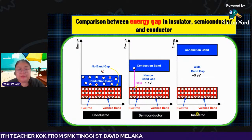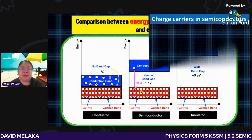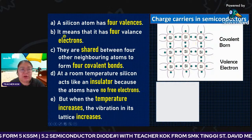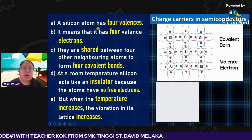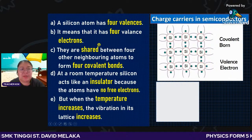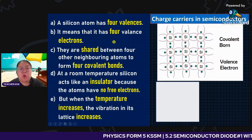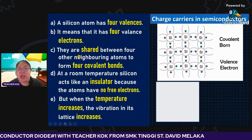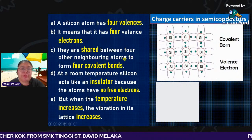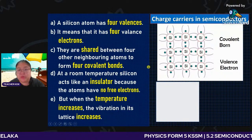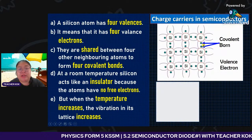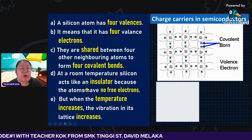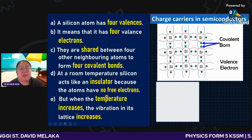Let's see how the semiconductor creates charge carriers. Taking silicon as an example: a silicon atom has four valence electrons. Every shell needs at least eight electrons, but silicon only has four, so they need to share. They are shared between four neighboring atoms to form covalent bonds. At room temperature, silicon is just like an insulator — it cannot conduct electricity because the atom has no free electron, so the electron cannot move.